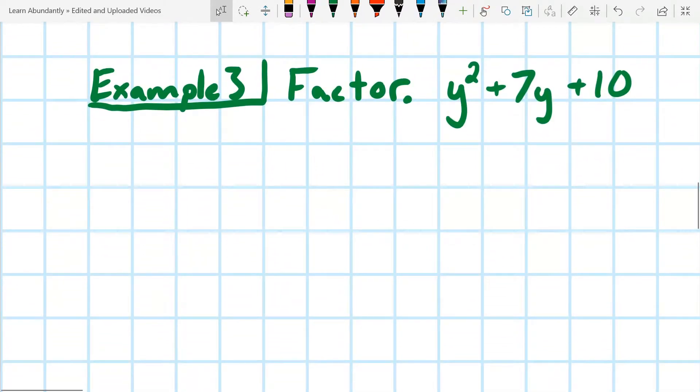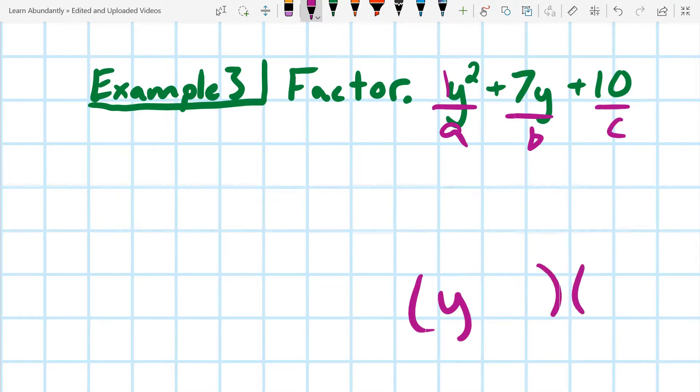Let's pick one that's not so obvious. Maybe this one throws us for a loop. So I'm going to do A, B, and C. And again, we have our 1 here, so we can ignore that. We know right off the bat that our answer is going to be Y something and Y something. I need all the factor pairs of 10. Well, 1 and 10.